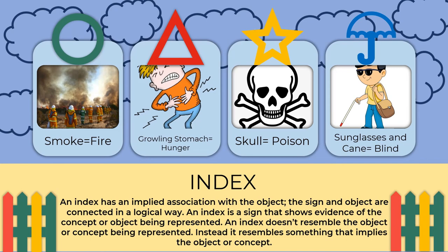An index has an implied association with the object — the sign and object are connected in a logical way. An index shows evidence of the concept or object being represented without resembling it directly; instead it implies the object or concept. Examples include: smoke implies fire, a growling stomach implies hunger, a skull implies poison, and a cane and dark glasses imply blindness.